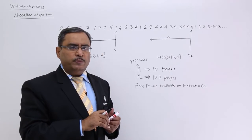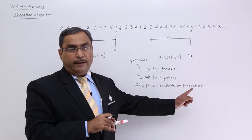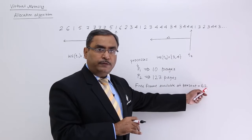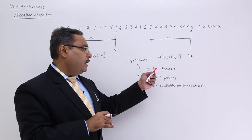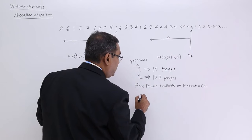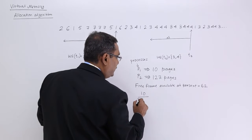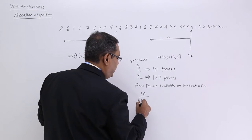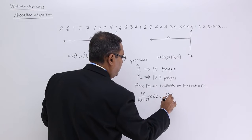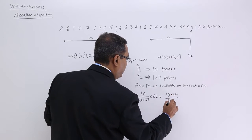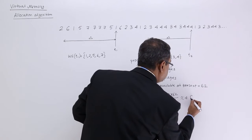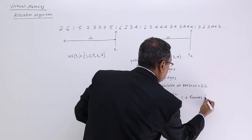In virtual memory, we are not supposed to load all pages at the same time, and there is also a shortage of free frames here. So how should these 62 free frames be allocated to P1 and P2 respectively? The calculation is done proportionally: for P1, it is (10 / (10 + 127)) × 62 = (10 / 137) × 62, which comes to around 4 frames for process P1.